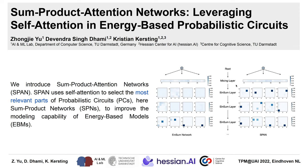We introduce Sum-Product Attention Networks, SPAN in short. SPAN uses self-attention to select the most relevant parts of probabilistic circuits — here sum-product networks, visualized with dark blue squares — to improve the modeling capability of energy-based models.